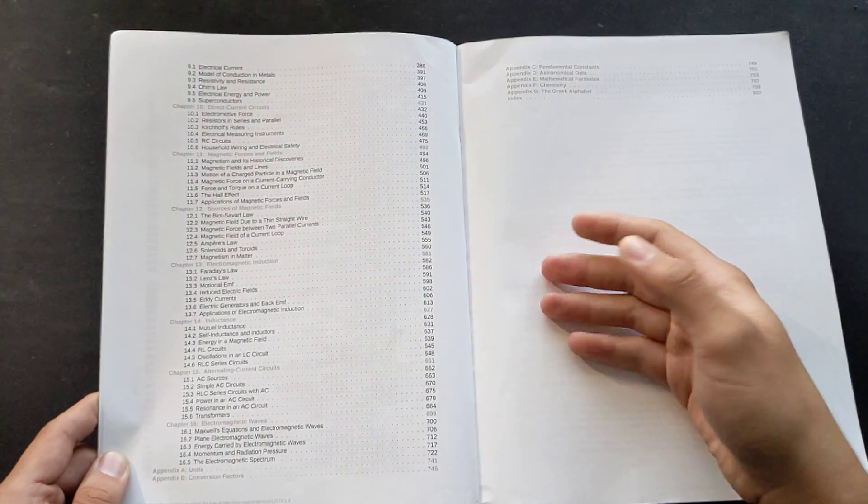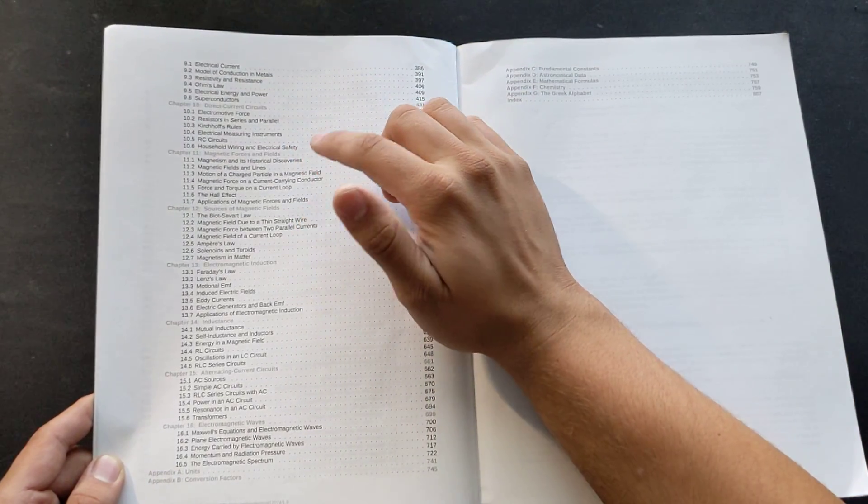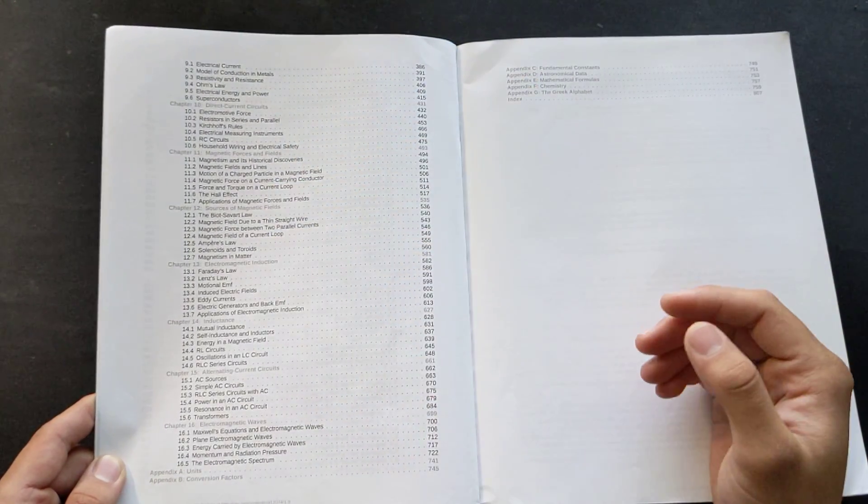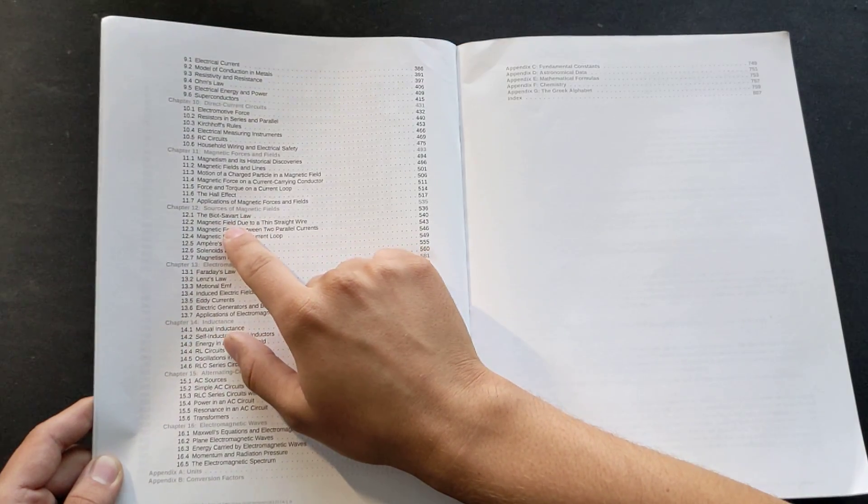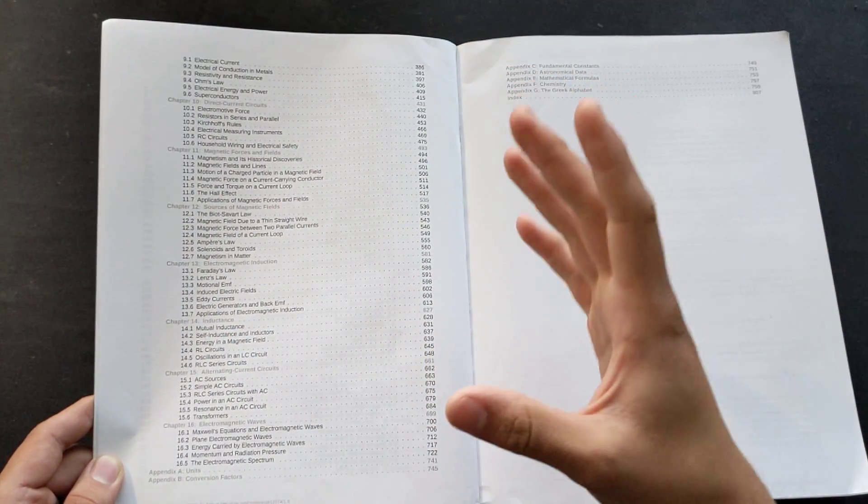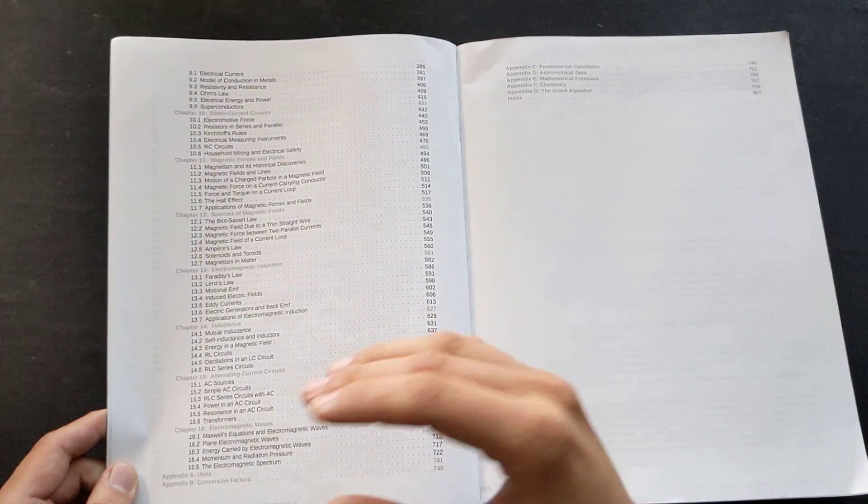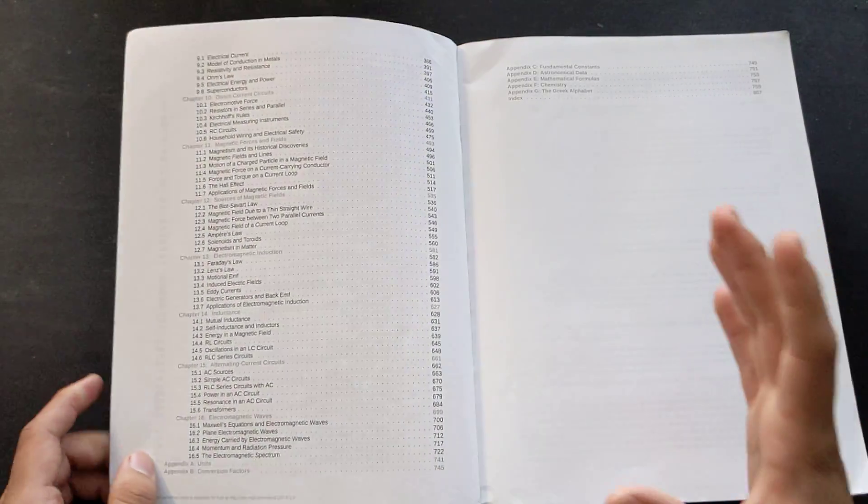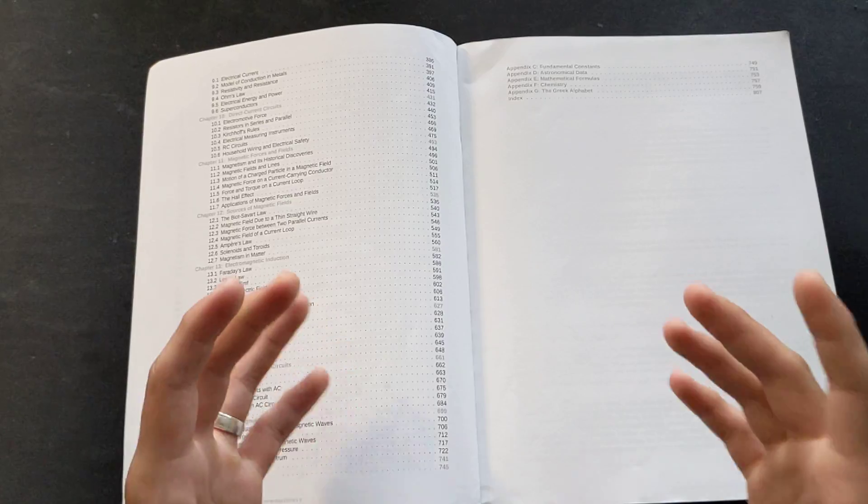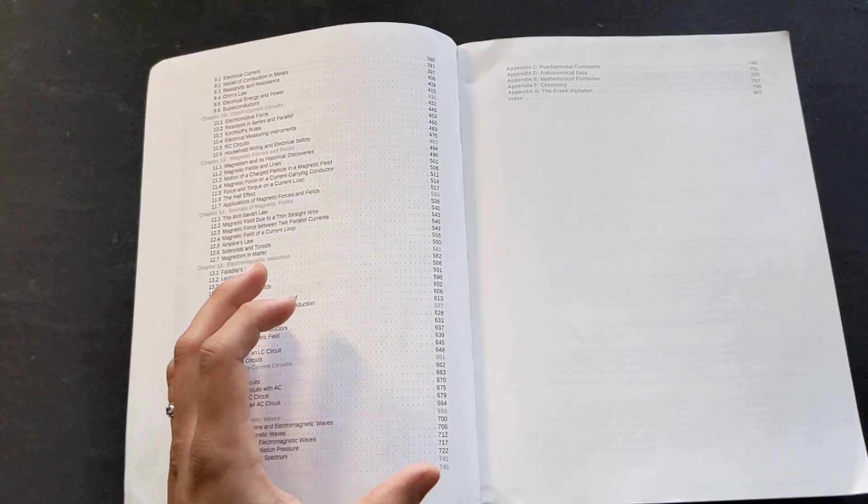And then you get back into the theoretical stuff. You get into magnetic forces and fields, sources of magnetic fields. The Biot-Savart law is one of my favorite equations in all of classical physics. It is such a beautiful vector integral, and you can do so much with it. I actually have a sheet that catalogs all the different fields that the Biot-Savart law creates.